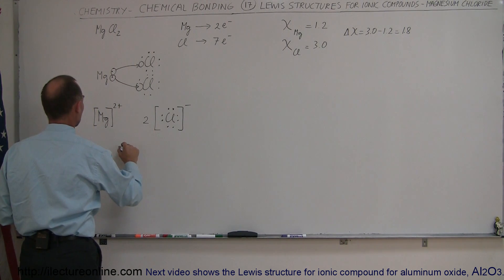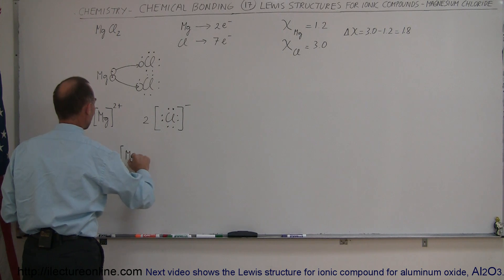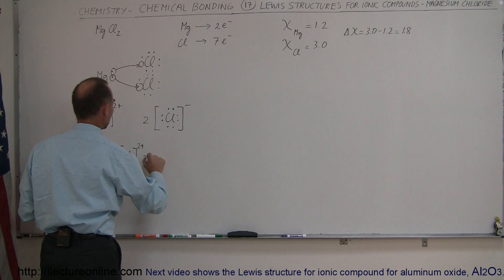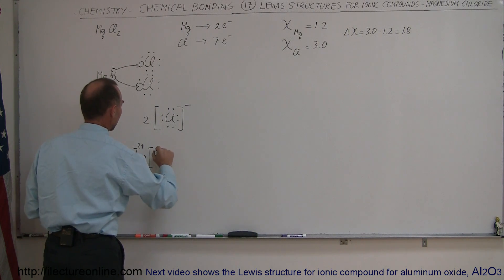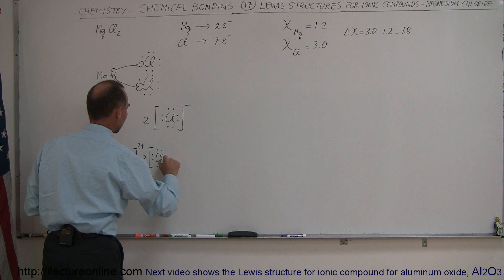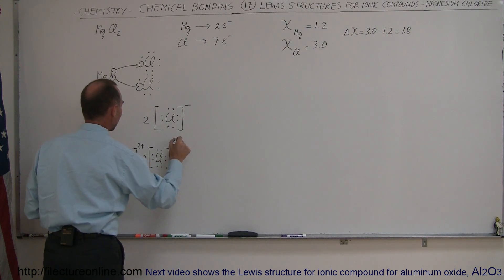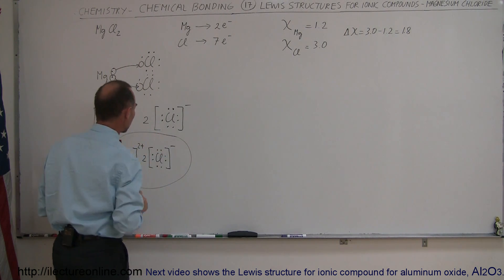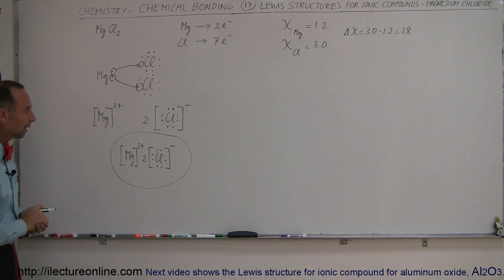So when we put those two together, it's going to look like this. We have a magnesium ion, which is two-plus, and then we have two chlorine ions, which are one negative. And here we have what we would call the Lewis structure for an ionic compound, and that's how you do that.